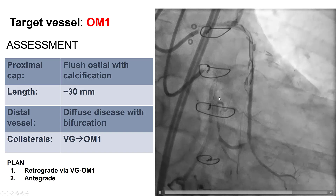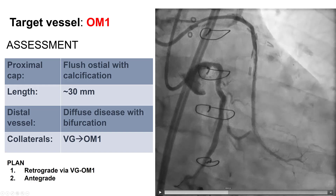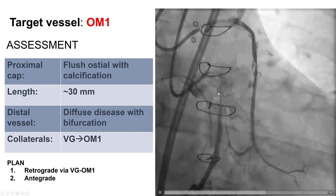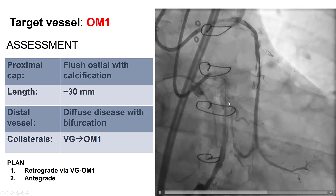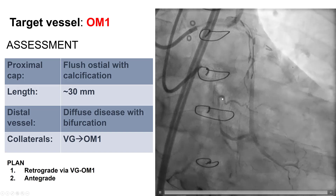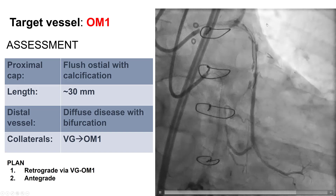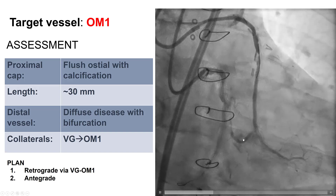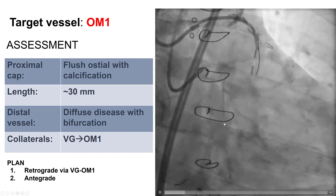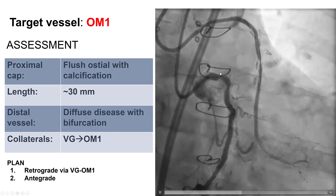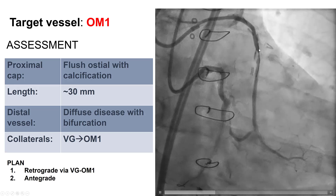Regarding the obtuse marginal CTO, it has an ambiguous proximal cap. There is a stent that was placed into the circumflex, so we don't really know where the obtuse marginal is coming in. There is some calcium suggesting the probable entry point, but there is absolutely no stump to guide antegrade crossing. Fortunately, the bypass graft fills the obtuse marginal retrograde. Given the ambiguity of the proximal cap, we decided to go with a primary retrograde approach through the saphenous vein graft.